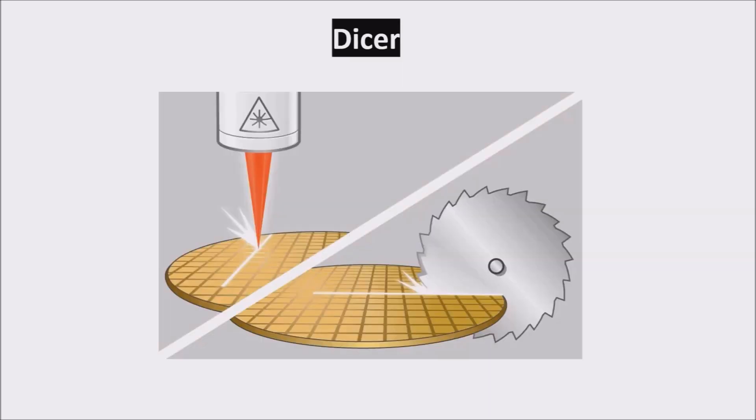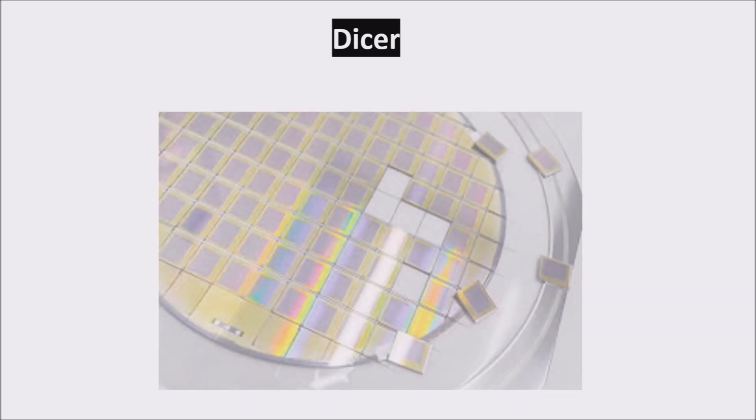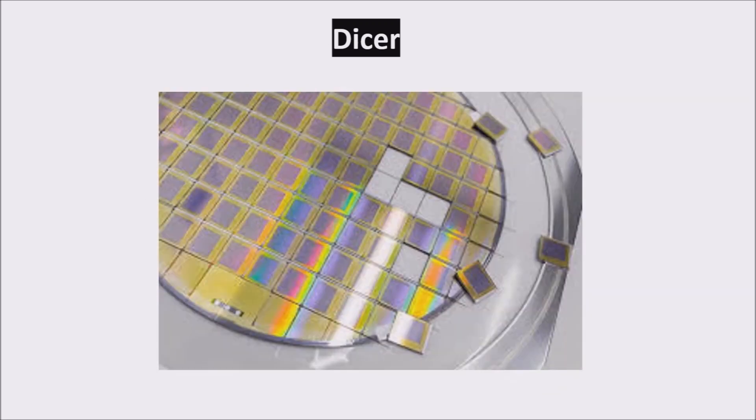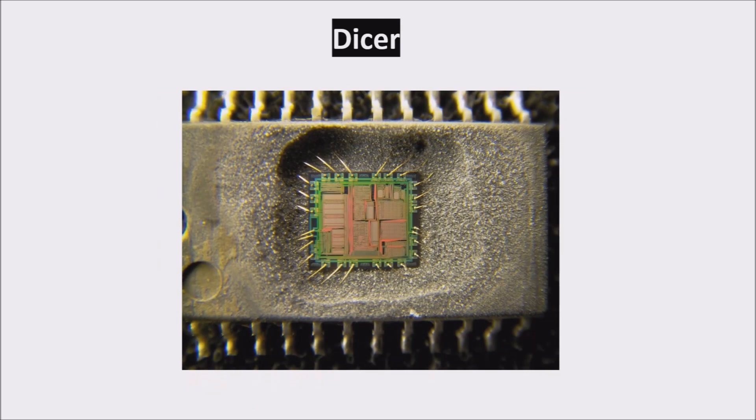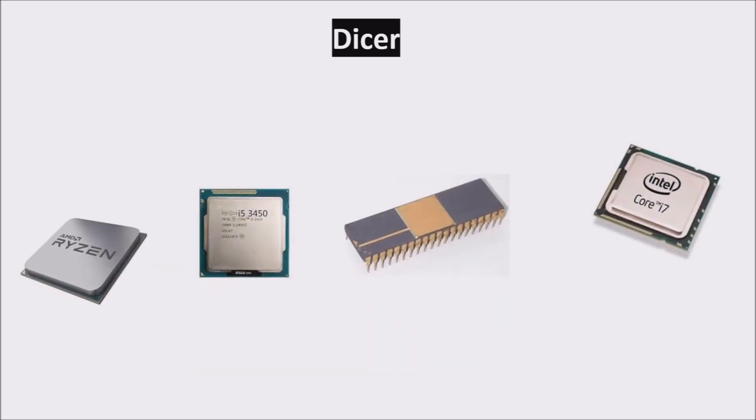After the creation of a patterned wafer, we use a dicer to free the dies from the wafer. After testing the dies, we package them and retest them, and then they are ready to be sent to customers.